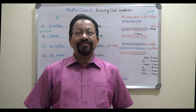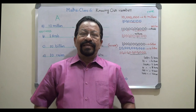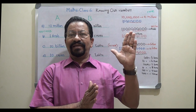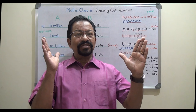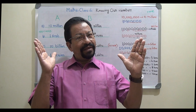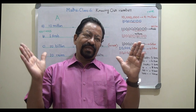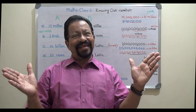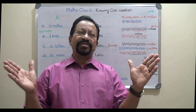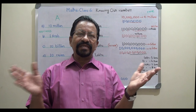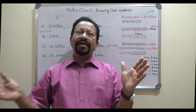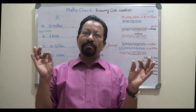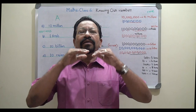In match-the-following questions, as I told you, in most cases the left-hand side is given as the Indian number system and the right-hand side choices will be the international number system. If the international system is on the left-hand side, the right-hand side will mostly be the Indian number system, or both can be the same — but most probably in opposite ways.